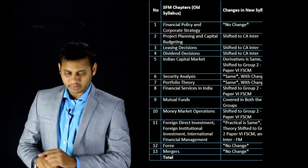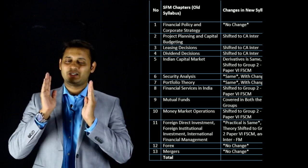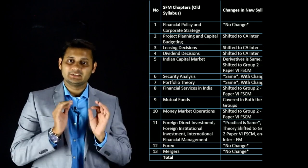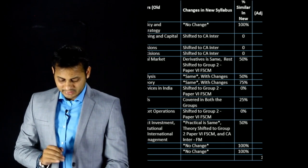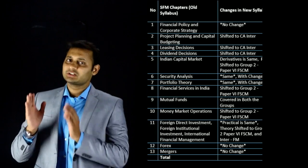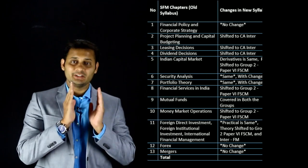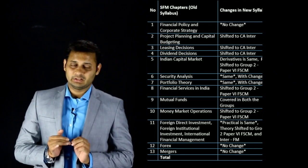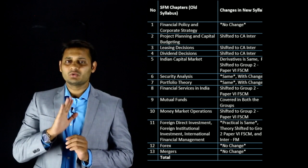Chapter 12 — Foreign Exchange and Risk Management — the full chapter from the old syllabus is retained in the new syllabus as well, so it is 100% in the new syllabus. Chapter 13 — Mergers, Acquisition and Restructuring — is also the same in the new syllabus, again 100%. That completes the chapter-wise detail of changes.